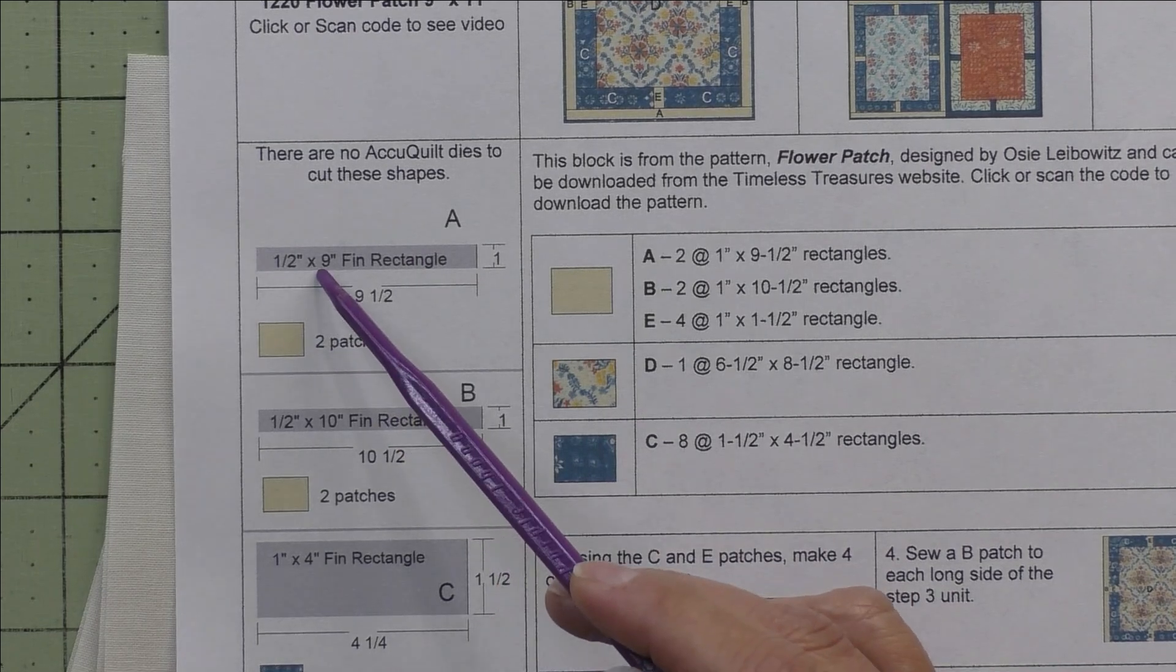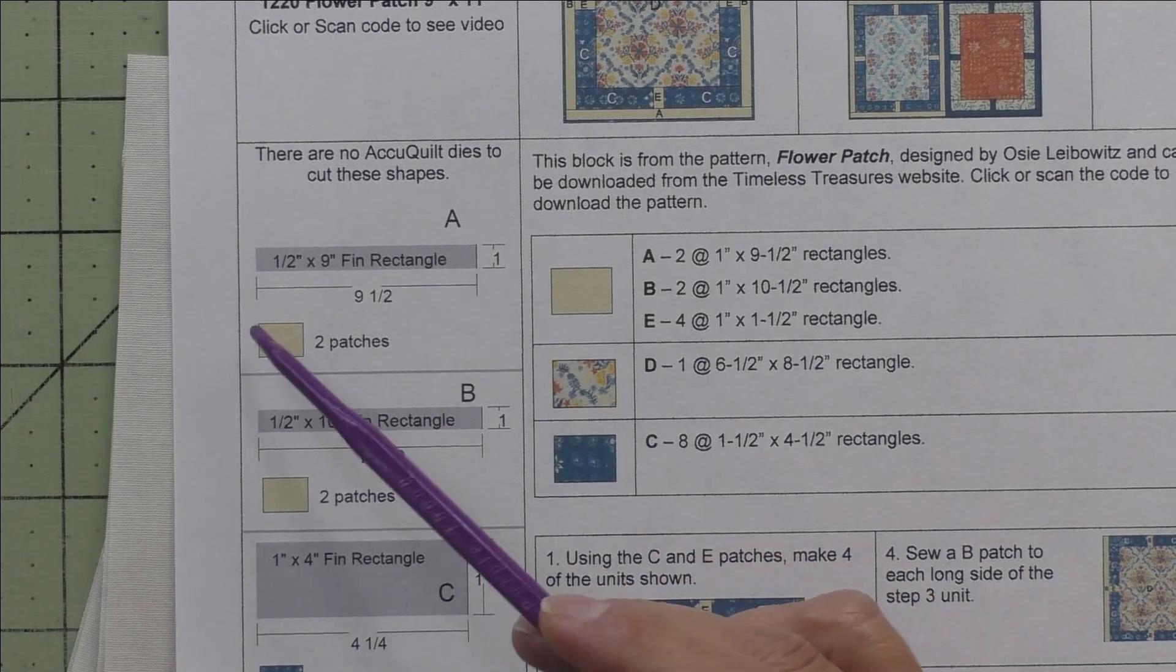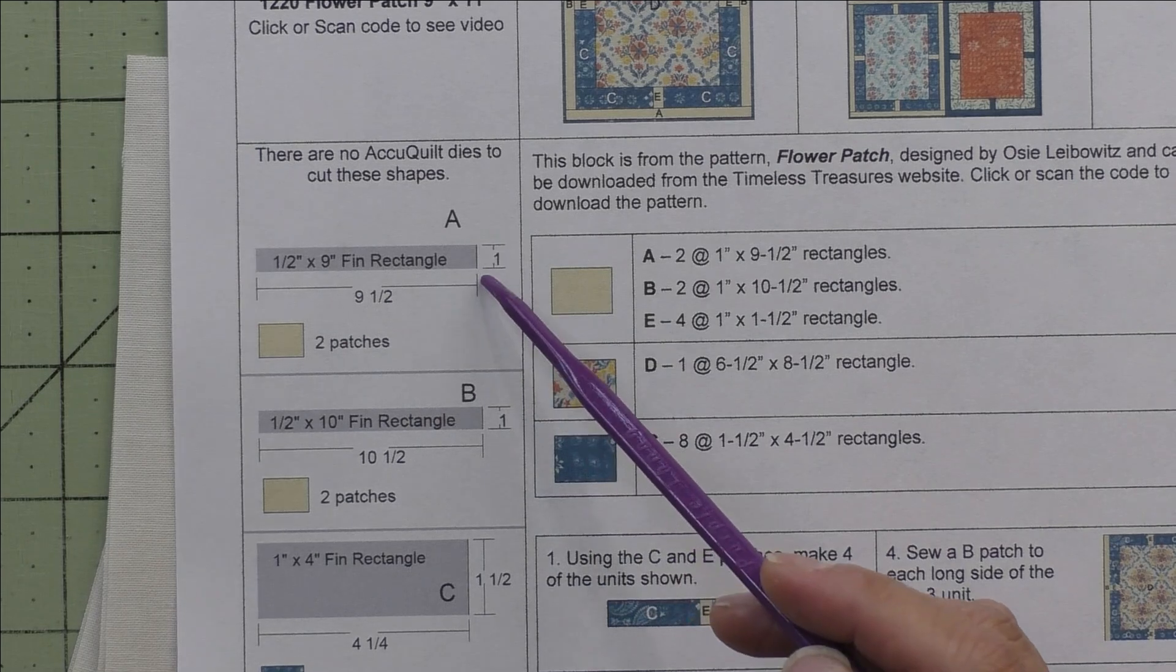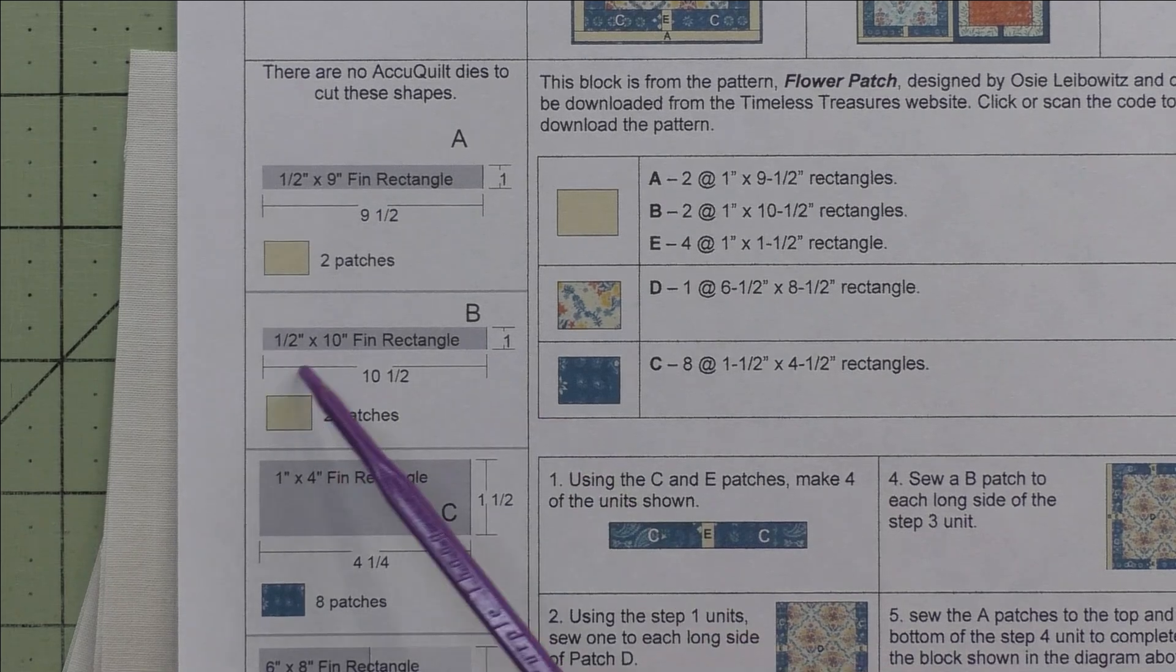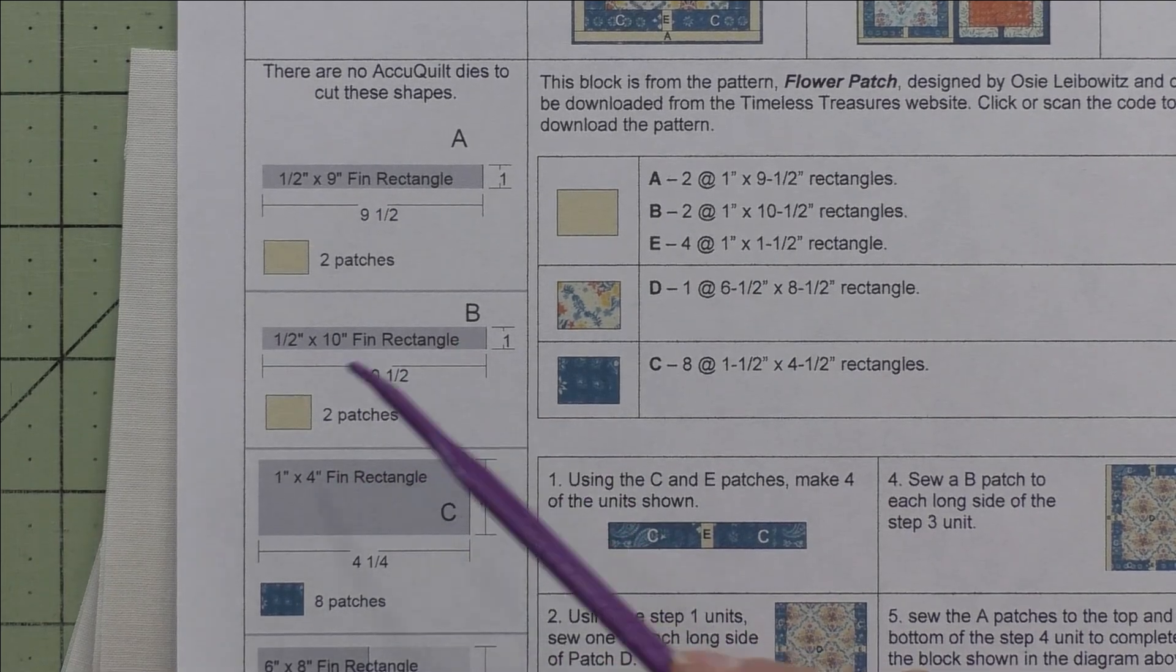Patch A is a 0.5 inch by 9 inch finished rectangle. We cut 9.5 by 1 inch rectangles and we'll need two patches. Patch B is a 0.5 inch by 10 inch finished rectangle. We cut 10.5 inches by 1 inch rectangles and we need two of those.